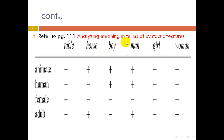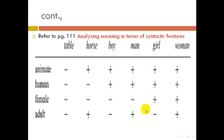Using semantic features: table is [-animate, -human, -female, -adult]; horse is [+animate, -human, -female, +adult]; boy is [+animate, +human, -female, -adult]; man is [+animate, +human, -female, +adult]; girl is [+animate, +human, +female, -adult]; woman is [+animate, +human, +female, +adult].